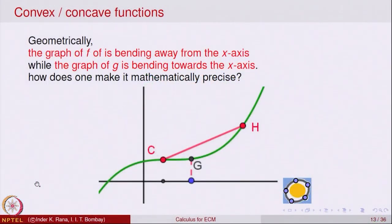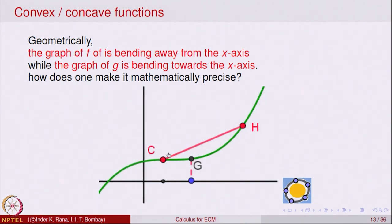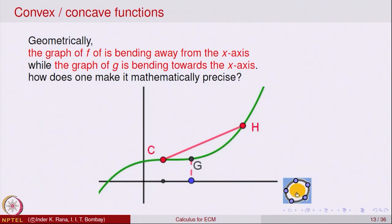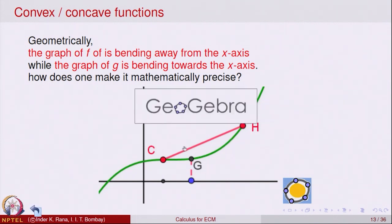How do we analyze this mathematically? This is the kind of scenario we are looking at. For example, in one portion of the green graph it is bending away from the x-axis, while in another portion it seems to be bending towards the x-axis. We would like to make this more precise — to understand geometrically what is happening and then formulate this property mathematically.